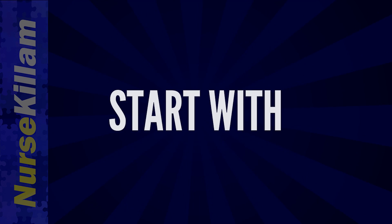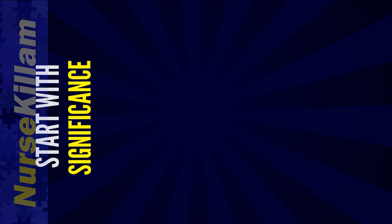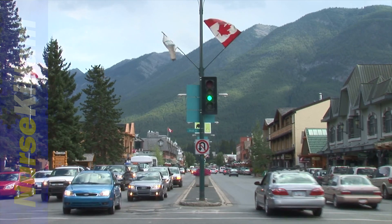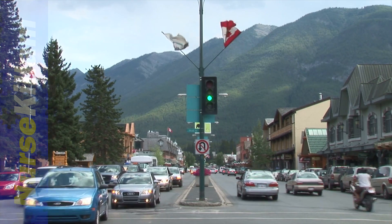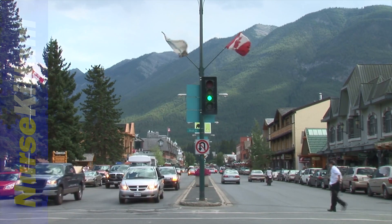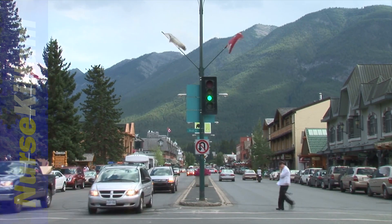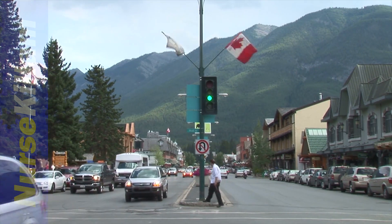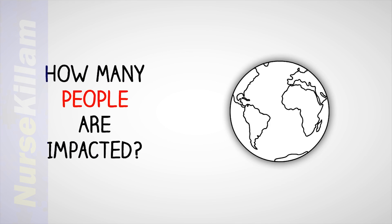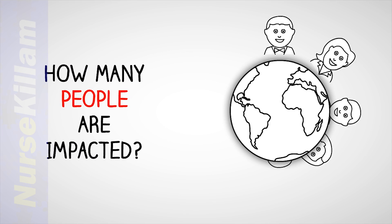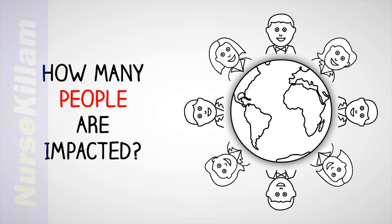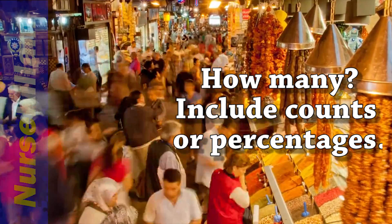Start by addressing the significance of the issue under investigation. What impact does the issue have on people? Two common ways to establish significance are by talking about the scope and/or magnitude of the issue. A good way to show the scope of a health problem is by including statistics about the number of people who have a particular problem.